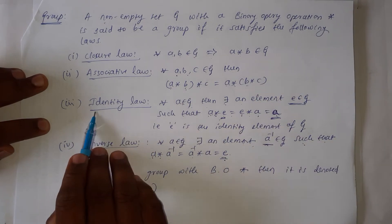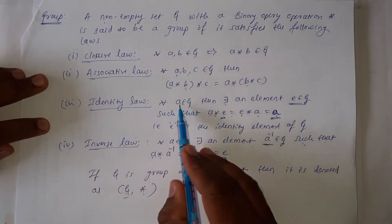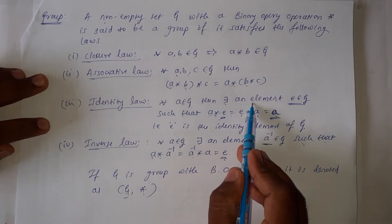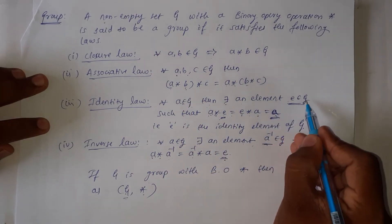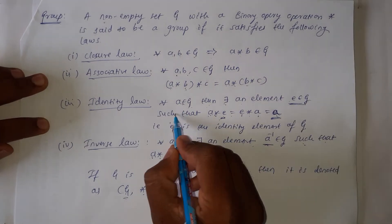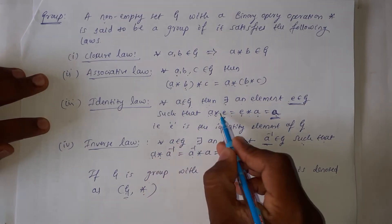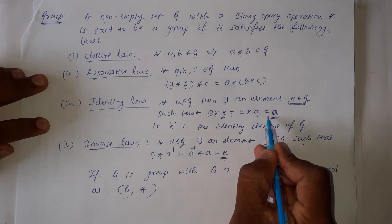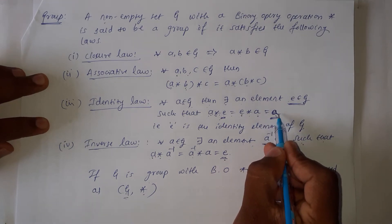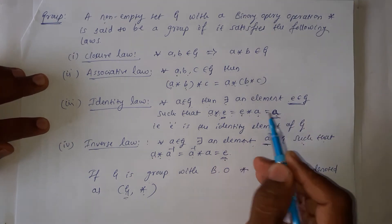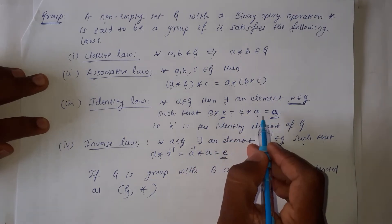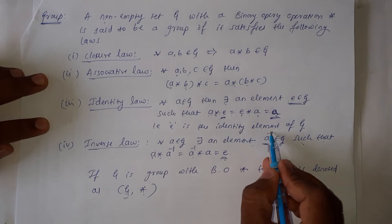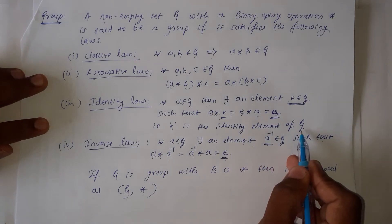The third one is identity law: for all a belonging to G, there exists an element e belonging to G such that a star e is equal to e star a is equal to a itself. If this condition is satisfied, then e is called the identity element of the set G.